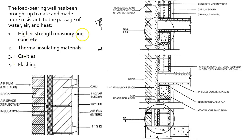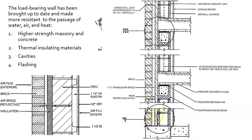Higher-strength masonry and concrete, better products, and new insulating materials were incorporated. Cavities were introduced — an airspace so that if any water gets behind the brick, it finds the cavity and heads down rather than in. Flashing is also ever so important; we can see some flashing at the bottom, that dark line.